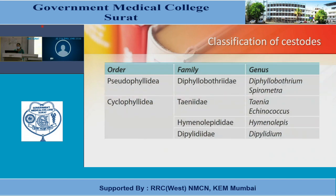Classifications of cestodes: Pseudophyllidian family includes Diphyllobothriidae — genus Diphyllobothrium and Spirometra. Cyclophyllidian family includes Taenia, Echinococcus, Hymenolepididae with Hymenolepis, and Dipylidiidae.